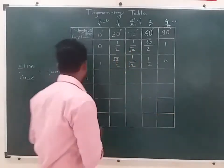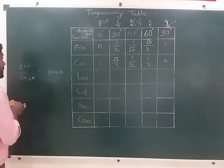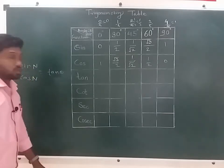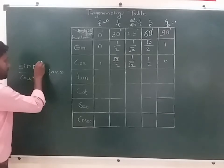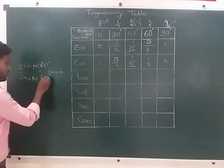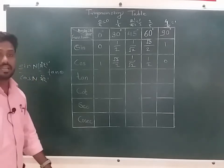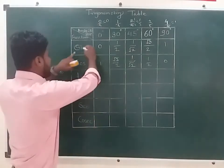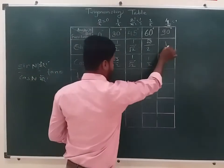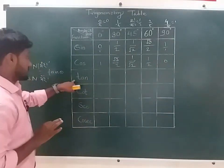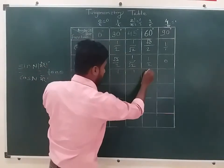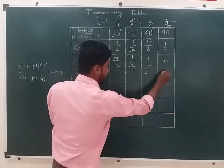The numerator: sin theta upon cos theta. So we have 1 here. We have to make an answer with a table. The values are: 0, 1, 1, root 3, and 1.